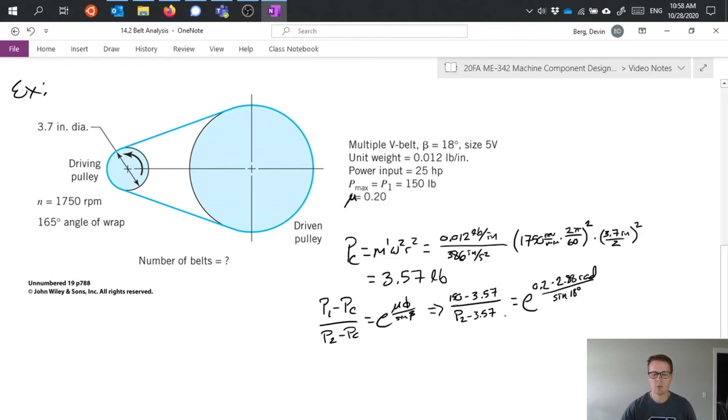Rearranging and solving this equation for P2, basically multiplying this denominator P2 minus 3.57 across to the right hand side, dividing this whole right hand side back over and then adding the 3.57 over. Once I've carried all that out I find that P2 is equal to 26.3 pounds.